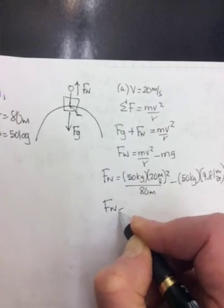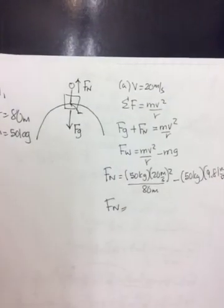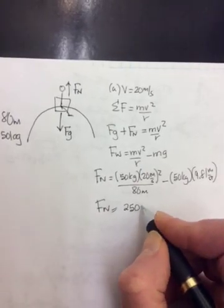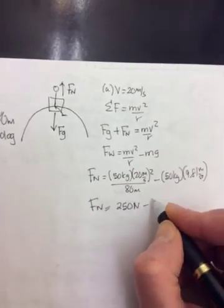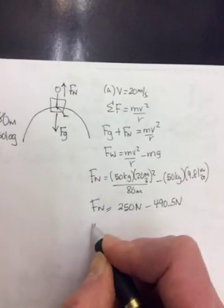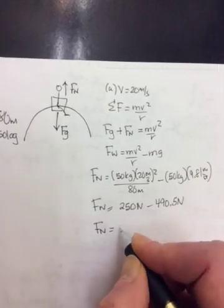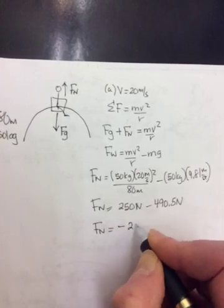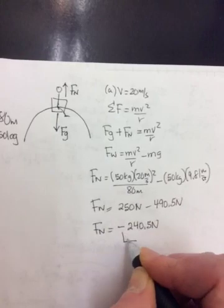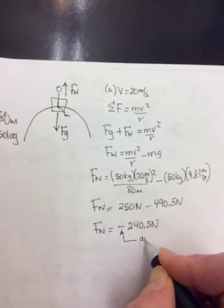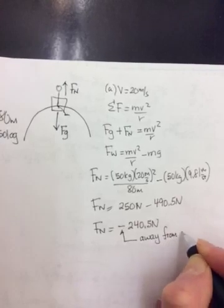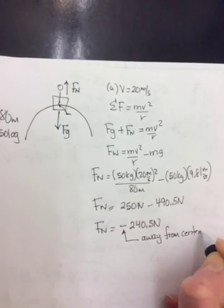Okay, so the first term, 80 goes into 405 times, so this should be 250 newtons minus, this should be 490.5 newtons. When we subtract, we get an Fn of negative 240.5 newtons. What does the negative mean? It means away from the center. Away from center.